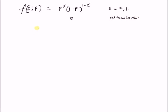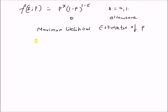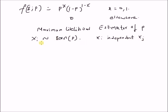Our goal is to find the maximum likelihood estimator of p. Given n observations, x_i, that has Bernoulli distribution with parameter p, and x_i is independent of x_j for i not equal to j — that is, given n iid observations — we want to find an estimate of p.